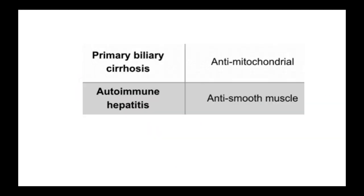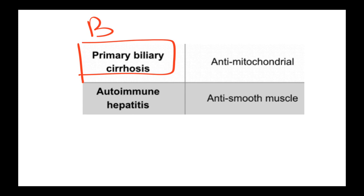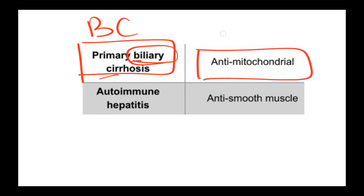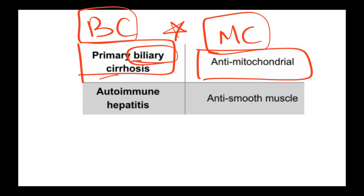Primary biliary cirrhosis (PBC) is an autoimmune disease. You can remember its antibody — anti-mitochondrial antibody — using the abbreviation BC paired with MC, which many Indians will find easy to recall.